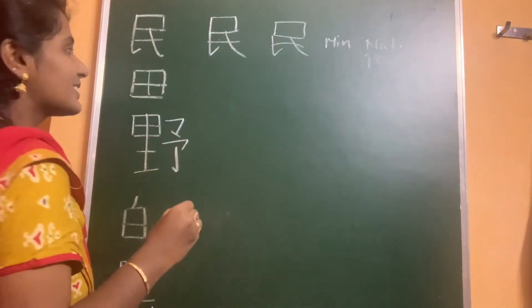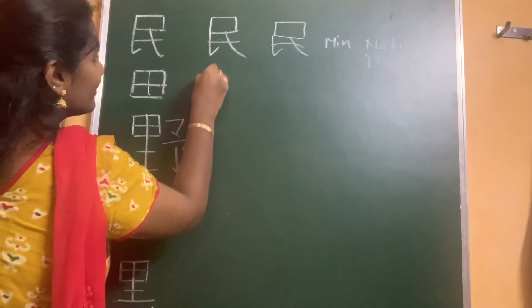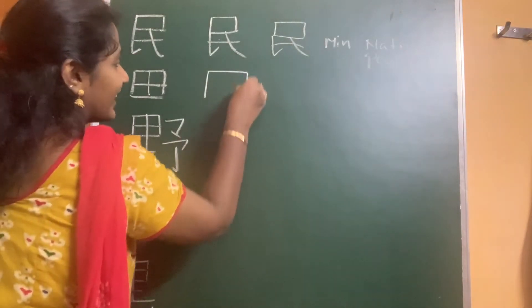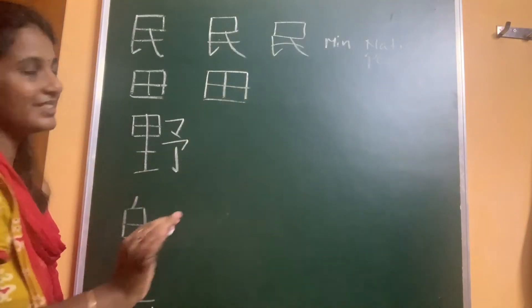This is the kanji for rice fields. First stroke, second, third, four and five. This is very simple.